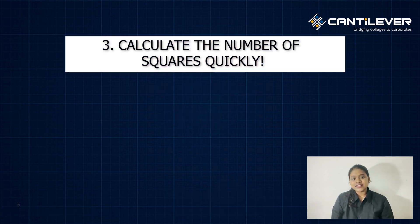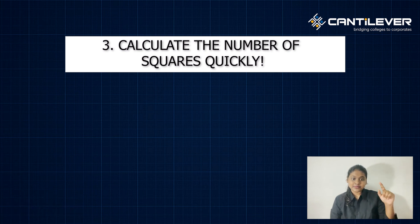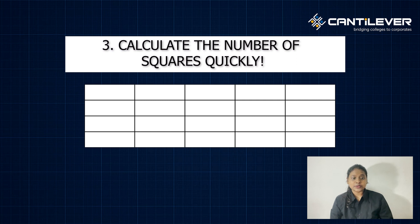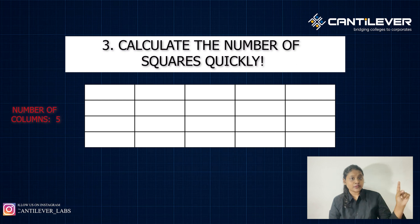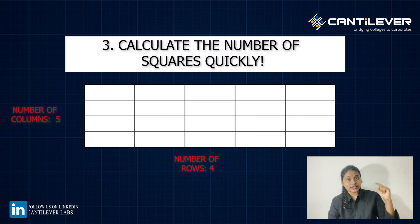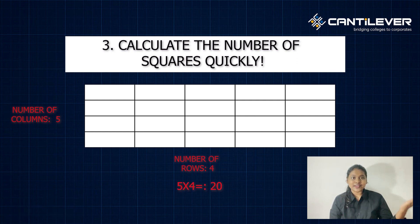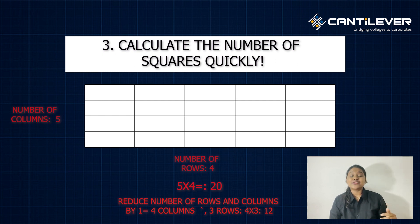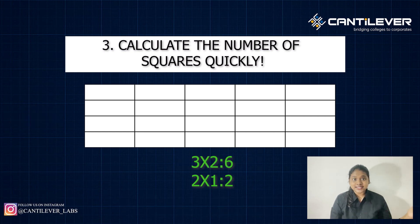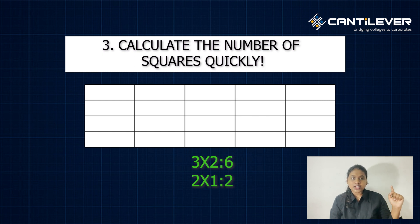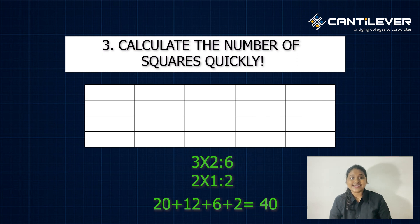Moving on, we will see a technique to calculate the number of squares with ease. Take an example of a table with 5 columns and 4 rows. Count columns: 5. Count rows: 4. Multiply both: 5 × 4 = 20. Reduce rows and columns by 1 each: 4 × 3 = 12. Continue reducing: 3 × 2 = 6, then 2 × 1 = 2. Now the number of rows is 1, so stop. Add all resultants: 20 + 12 + 6 + 2 = 40. That is the number of squares existing in the given table.